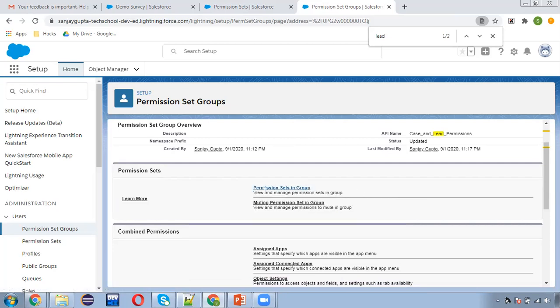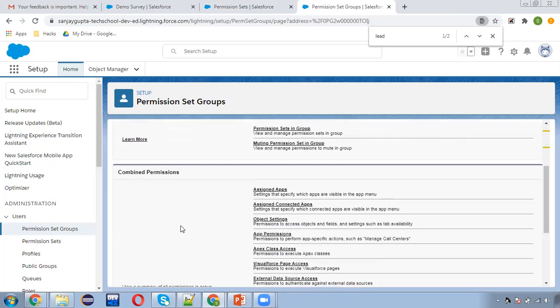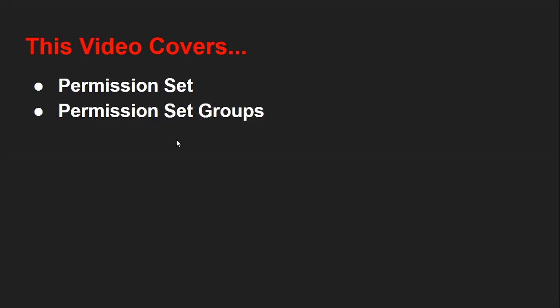These are two important options: you can make a particular permission set a member of this group, and if you want to mute any permission, you can do that as well. I hope you understood how we can use individual permission sets and permission set groups. Remember: if a permission set is part of a permission set group, it can still be assigned individually to users. Thank you for watching this video.